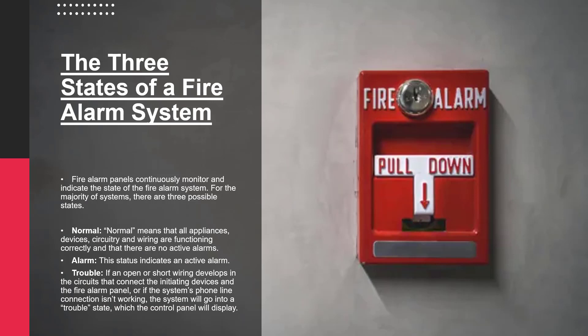The three states of a fire alarm system: fire alarm panels continuously monitor and indicate the state of the fire alarm system. For the majority of systems, there are three possible states. Normal means that all appliances, devices, circuitry and wiring are functioning correctly and that there are no active alarms. Alarm indicates an active alarm. Trouble occurs if an open or short wiring develops in the circuits connecting the initiating devices and the fire alarm panel, or if the system's phone line connection isn't working — the system will go into a trouble state, which the control panel will display.